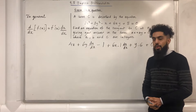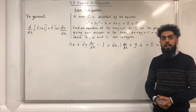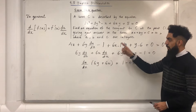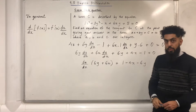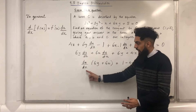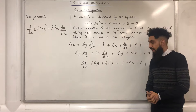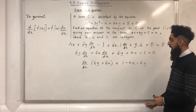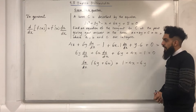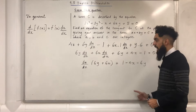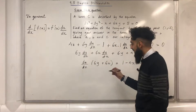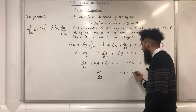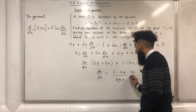Now I need to make dy over dx the subject. After simplifying, I get 6y dy over dx plus 6x dy over dx plus 6y plus 4x minus 1 equals 0. Factoring out dy over dx gives (6y plus 6x) dy over dx equals 1 minus 4x minus 6y. Dividing both sides by 6y plus 6x gives dy over dx equals (1 minus 4x minus 6y) all over (6y plus 6x).